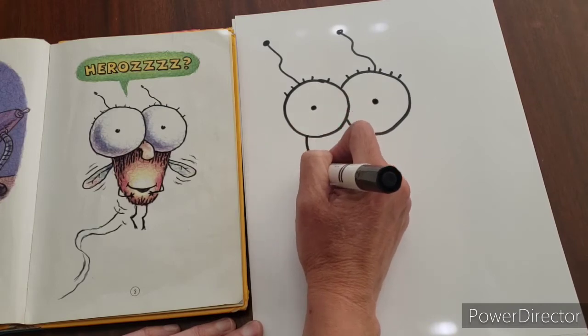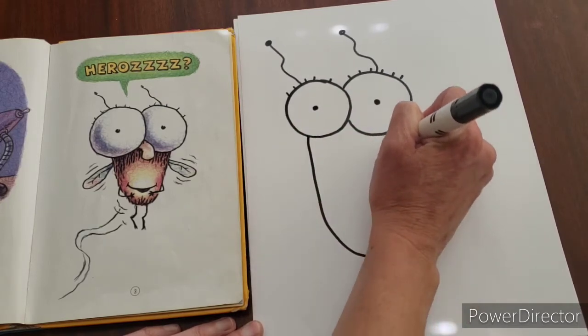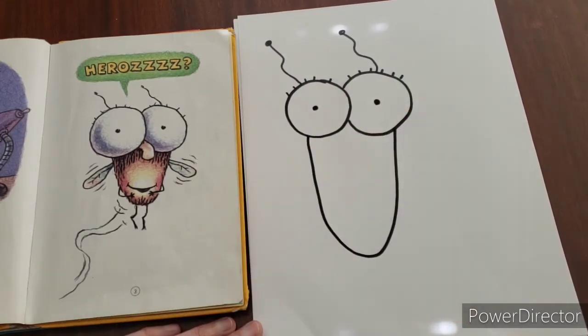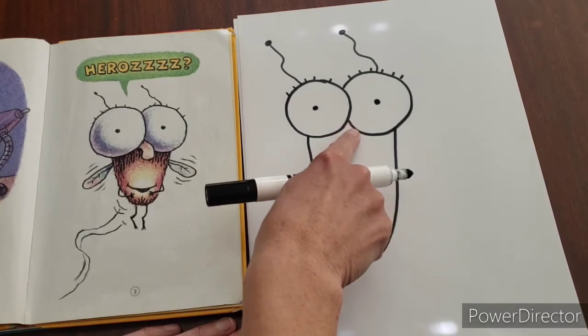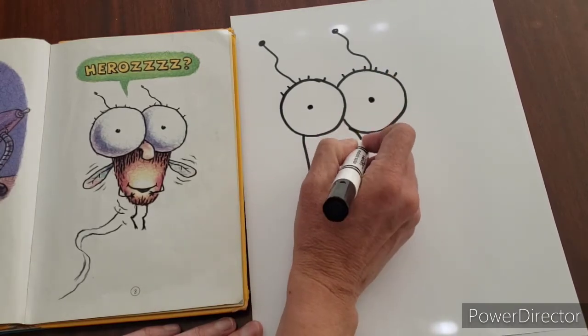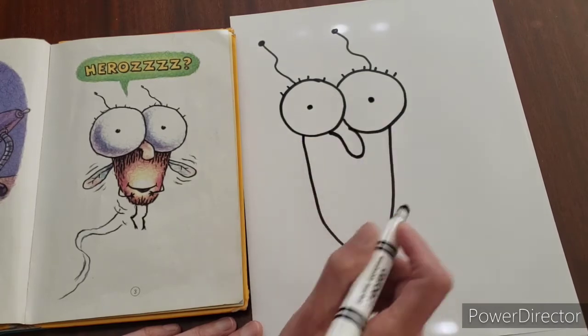Now we're going to do his body, which is just kind of like a half circle. So you're going to come down like this and bring it up. And then in between his two eyes you're gonna give him a little nose. It's kind of a little hook nose.